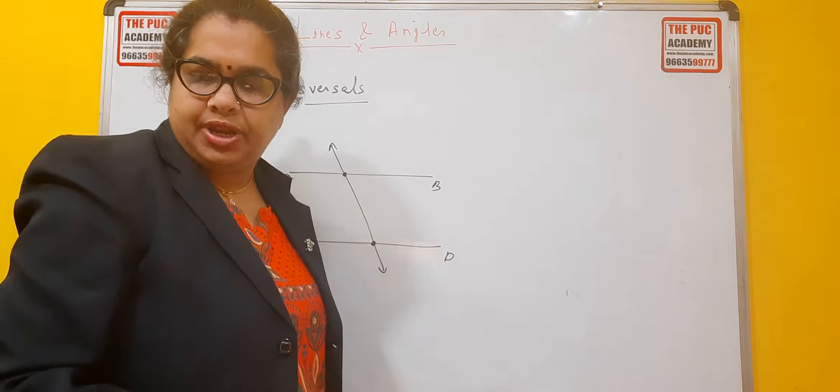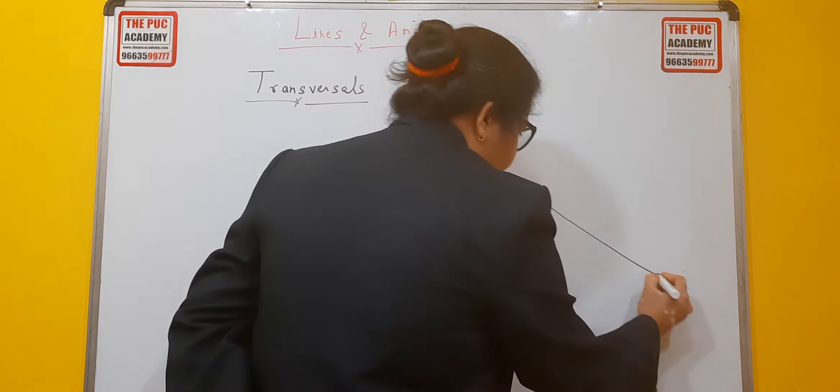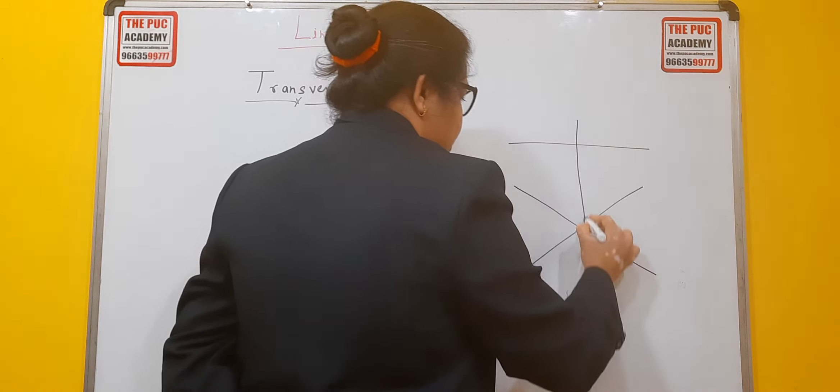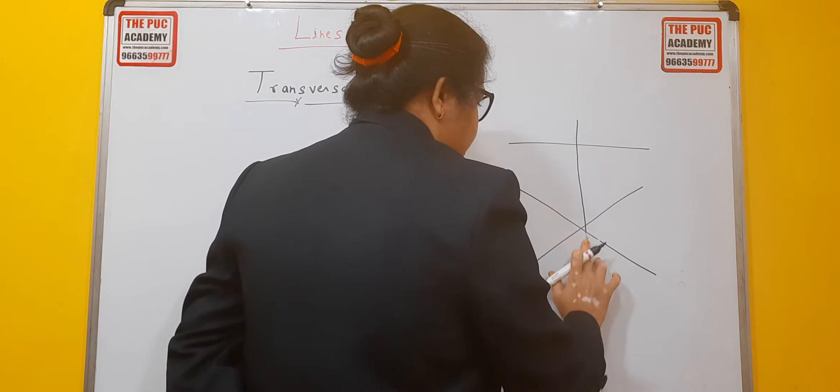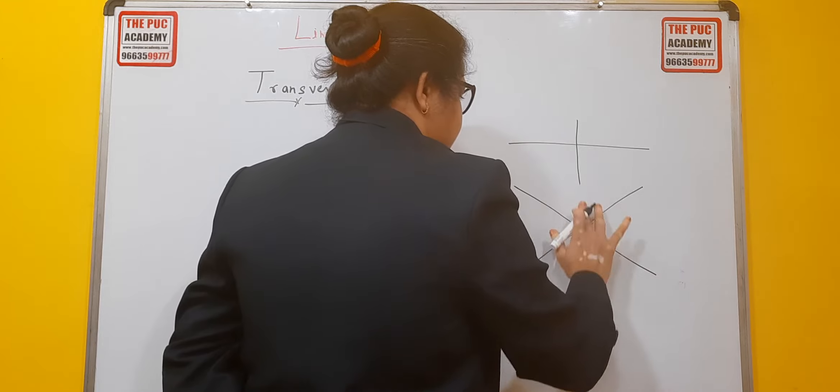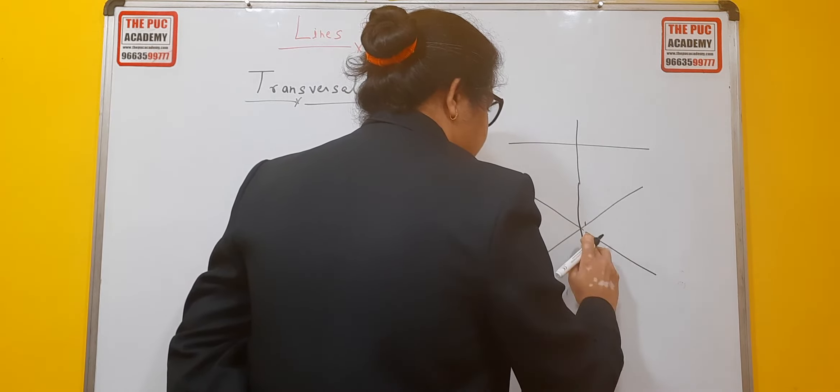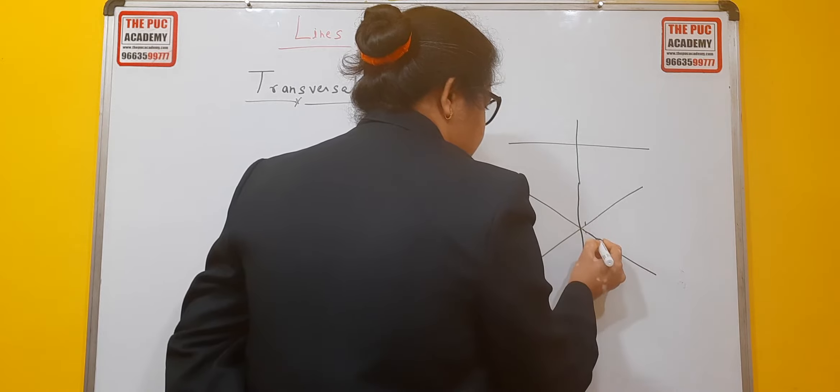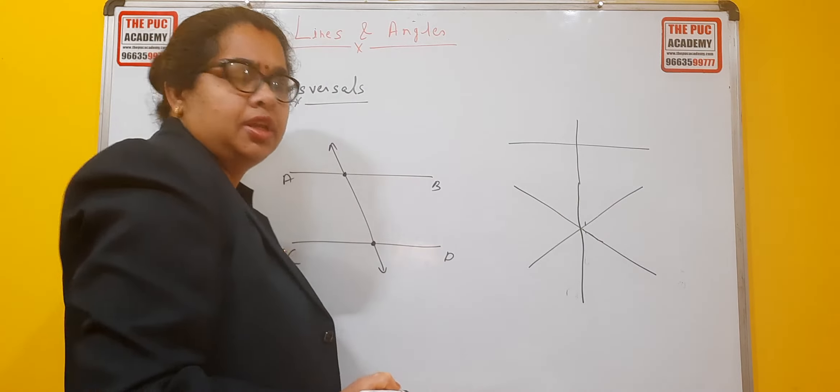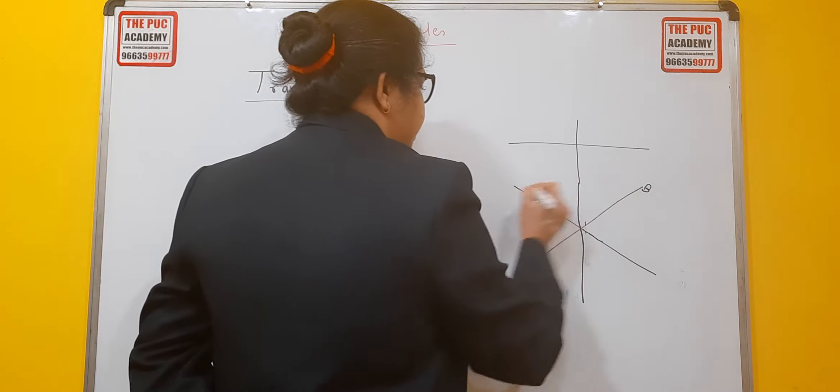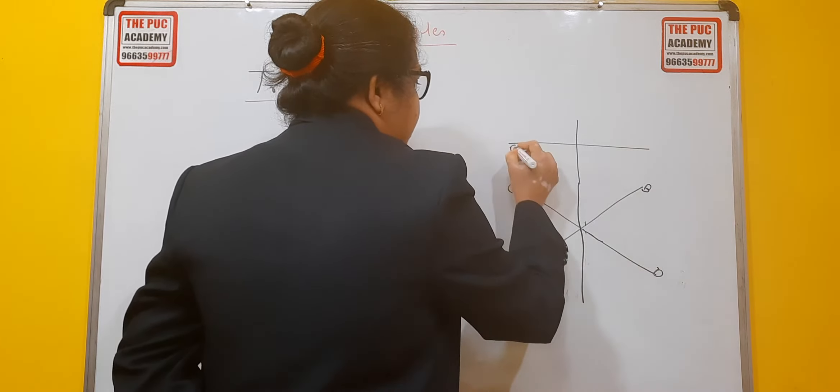We will take another example here. See, this is the example here. In this example, there is a line A, B, C, D, E, F.